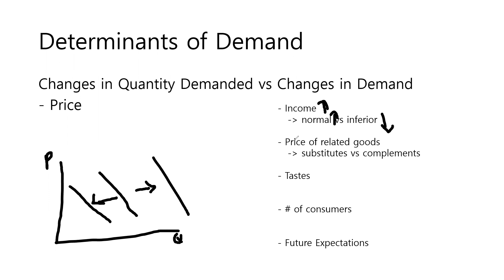The second determinant is the price of related goods, of which there are two types. The first is substitutes — for example, hamburgers and hot dogs — goods that we can substitute for one another. The second is complements, which enhance the quality or satisfaction of other goods, for example hamburgers and cola. If the price of a substitute increases, the demand for the initial good will also increase. However, if the price of a complement increases, the demand for the initial good will decrease.